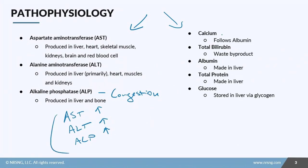Looking at the other values: calcium is included because it's associated with albumin and follows it. Because albumin and other proteins are made in the liver, we monitor them to ensure they're being produced appropriately. We look at total bilirubin because it indicates liver dysfunction — the liver is responsible for breaking down bilirubin and sending it to the GI tract. Glucose is included because it's stored in the liver as glycogen.